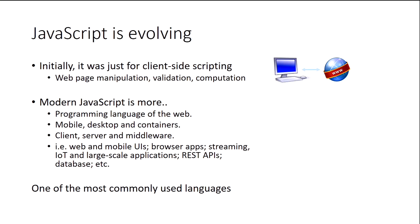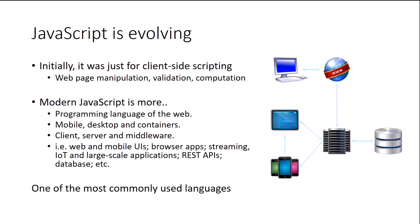JavaScript is evolving. Initially it was just for web page manipulation — data validation, small processing. But modern JavaScript is more. It's the programming language of the web. It's for mobile, desktop, and containers. It runs everywhere — in clients and servers, in your middleware. Node.js can act as a middleware. You'll see it in web applications, mobile UIs, browser applications, streaming applications like Netflix, IoT, large-scale applications, REST APIs, databases like MongoDB. It's one of the most used languages nowadays.